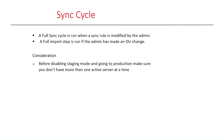A full sync cycle is performed if during the upgrade process a sync rule is modified by the admin, or if the newer version includes new, updated, or modified sync rules. A full import step is done if the admin has made OU changes. Before disabling staging mode and going to production, make sure you don't have more than one active server at a time. Thank you.